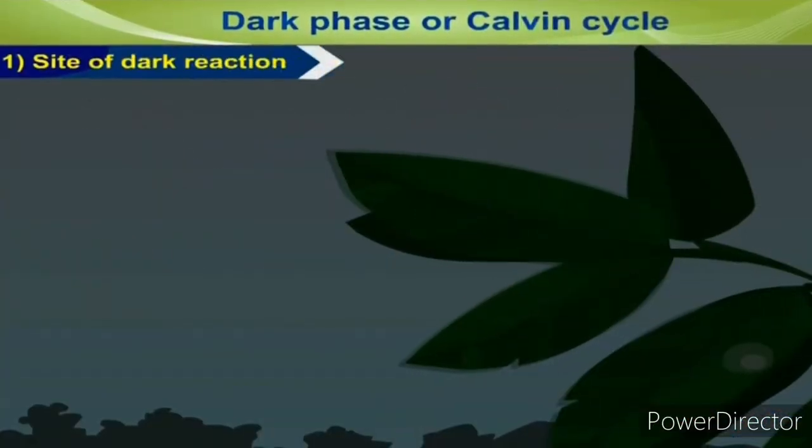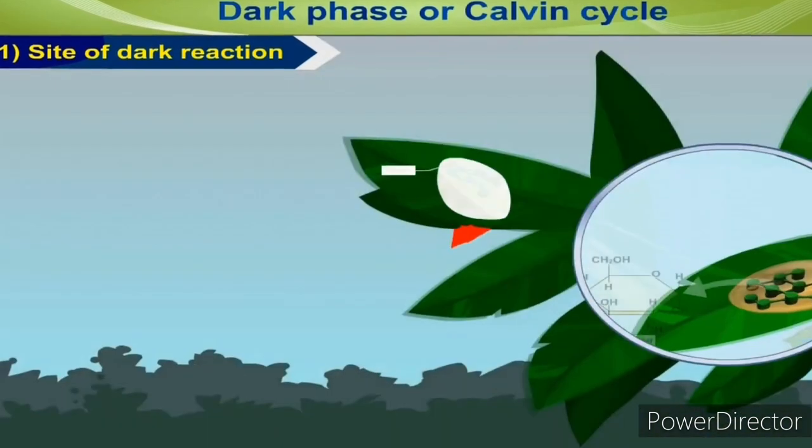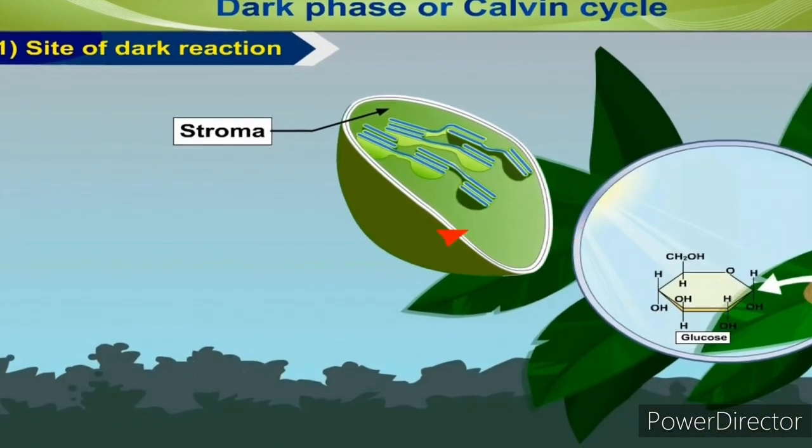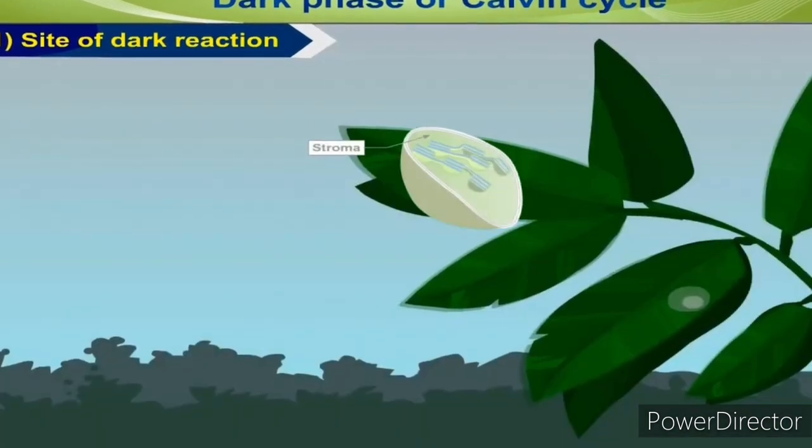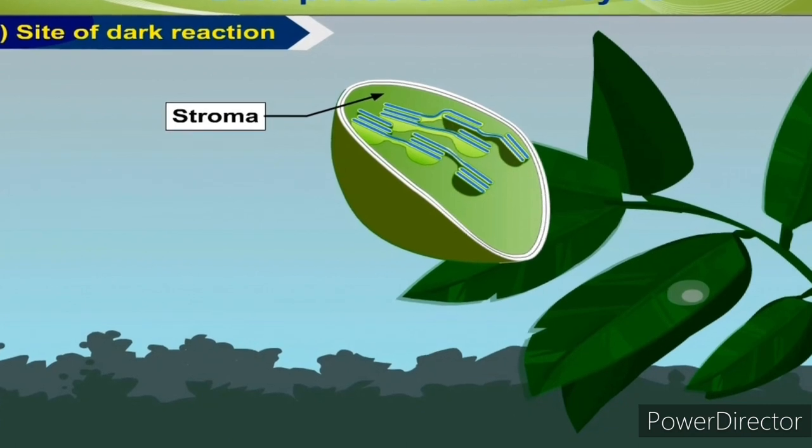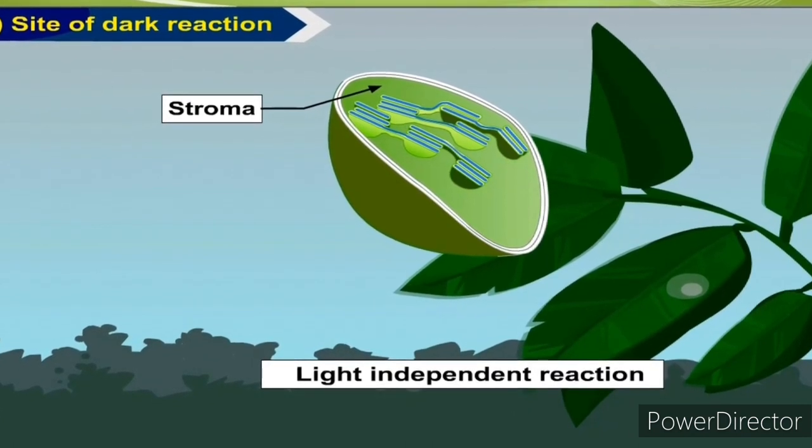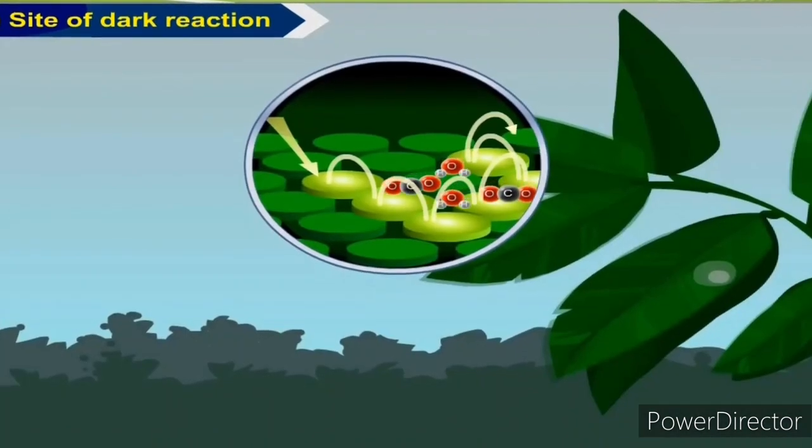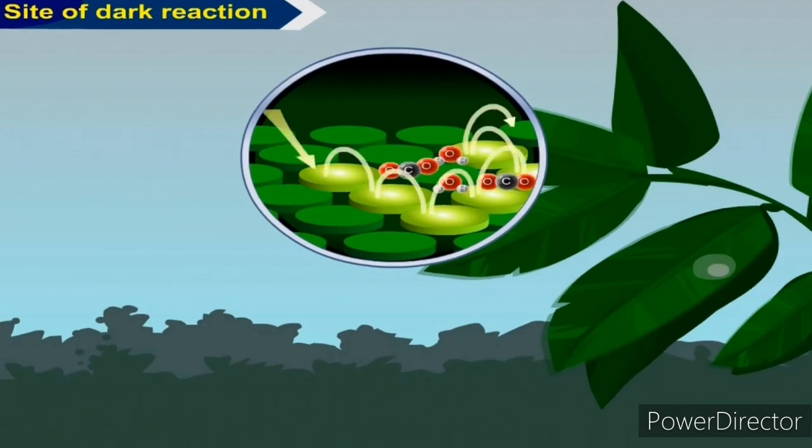Dark reaction is the second stage of photosynthesis, which produces glucose from the energy of adenosine triphosphate and NADPH produced in the light reaction. It occurs in the stroma of the chloroplast. The dark reaction occurs in two reaction mechanisms, C3 cycle and C4 cycle. C3 cycle is called the Calvin cycle, whereas C4 cycle is called the Hatch-Slack cycle.